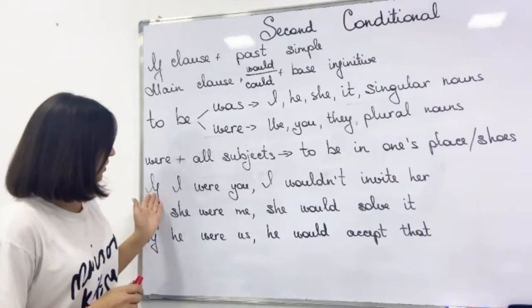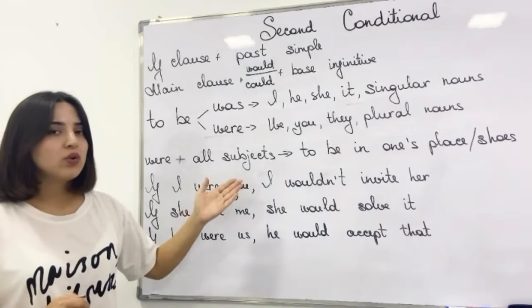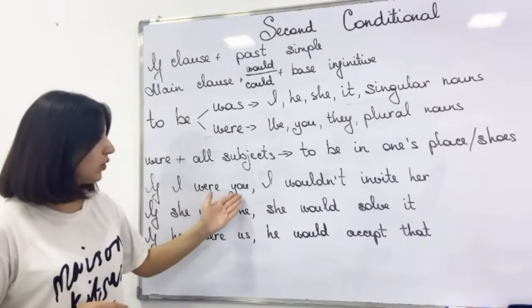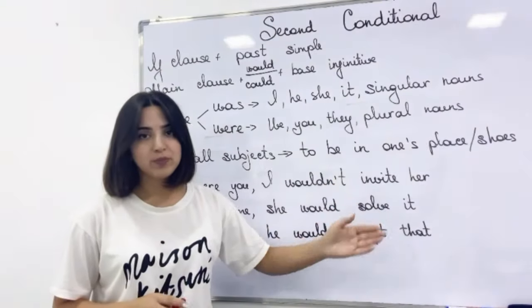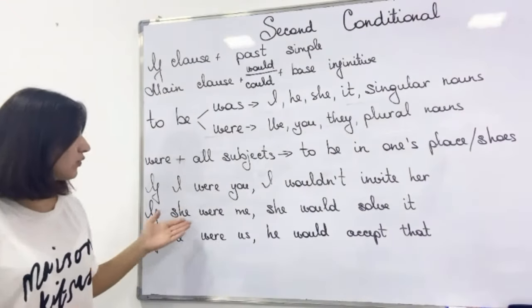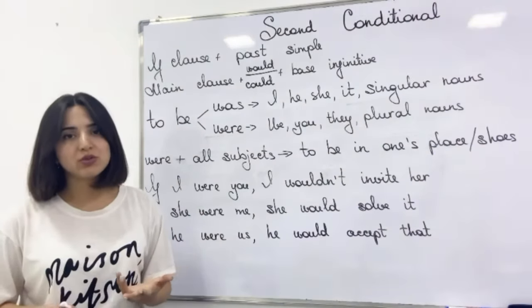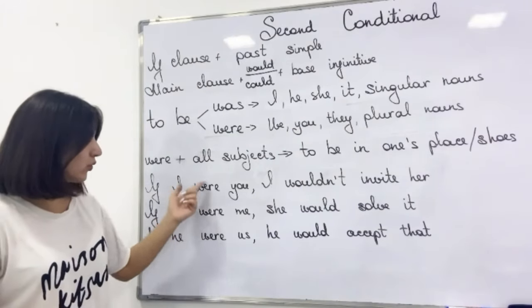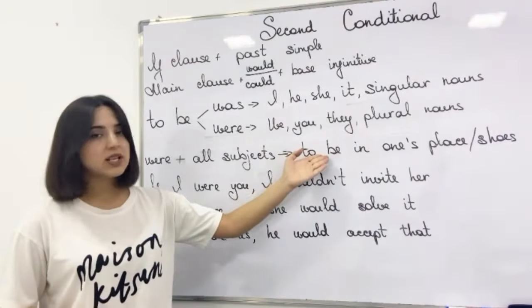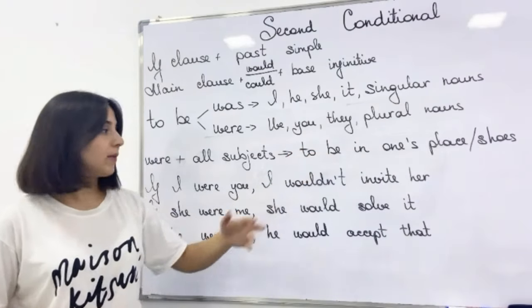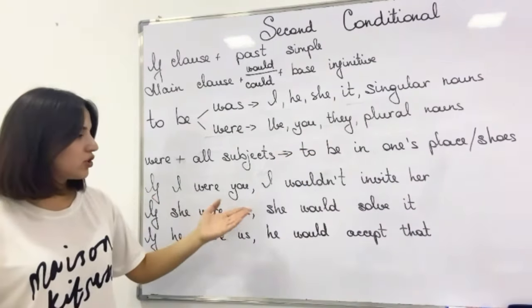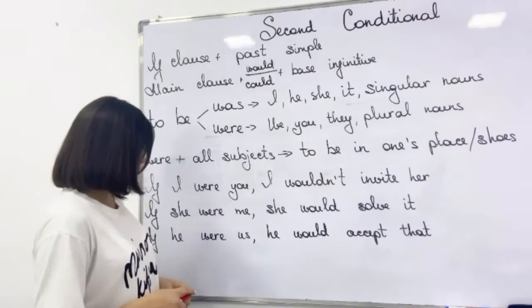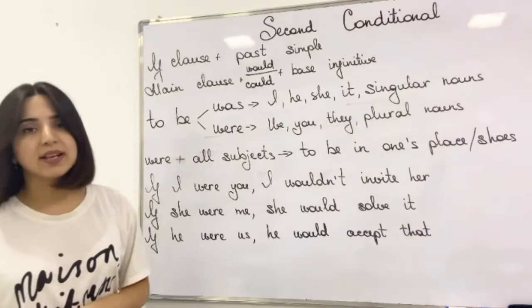For example, 'if I were you' means 'if I was in your situation'. So: if I were you, I wouldn't invite her. Or 'if she were me' — in general we should use 'was' with I, she, and he, but I have used 'were' with all of them because all these sentences give us this meaning of being in someone's place. So: if she were me, she would solve it. Or if he were us, he would accept that.